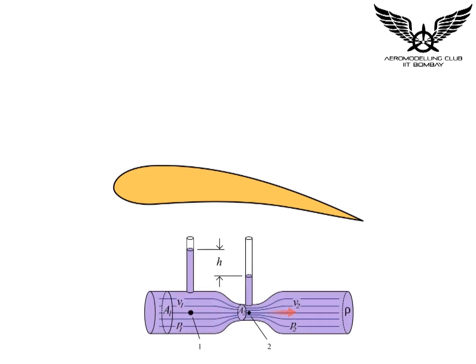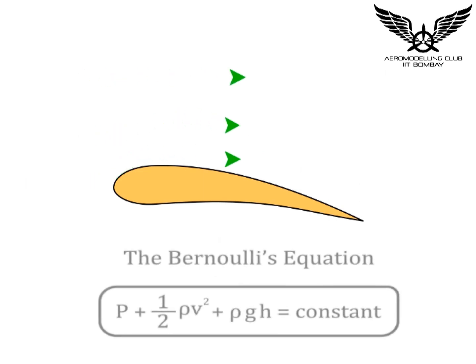The upper surface of the airfoil acts as a venturi nozzle constricting the flow. Through this constriction, as the area between the streamlines decreases, the flow speeds up. From Bernoulli's equation, high velocity gives low pressure and this decreased pressure on the upper surface gives rise to lift.